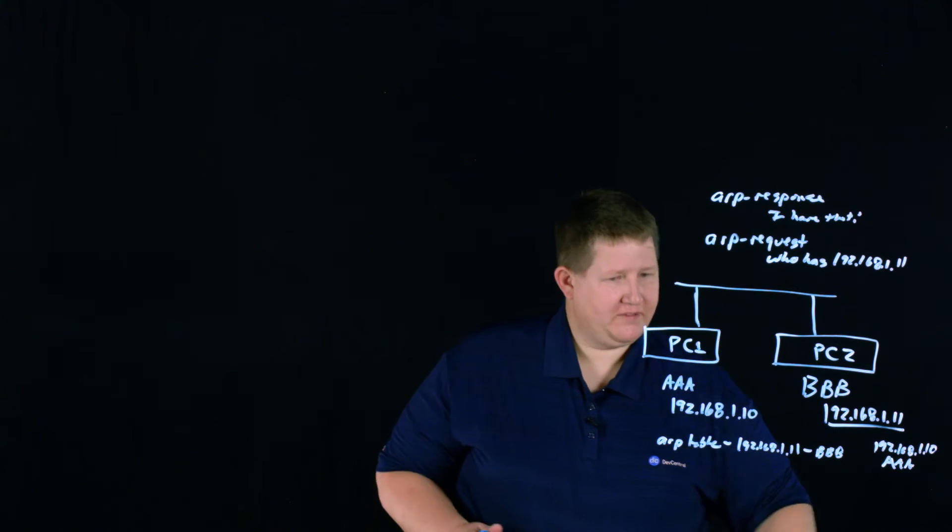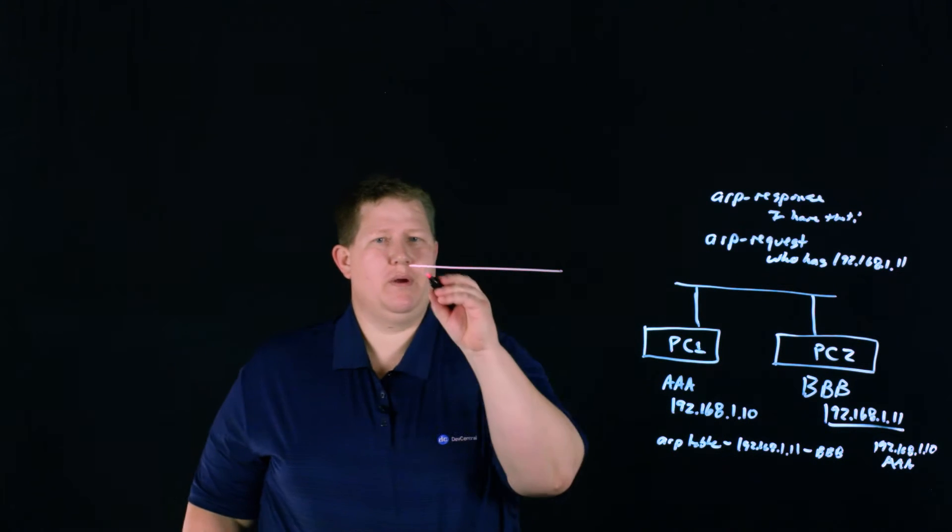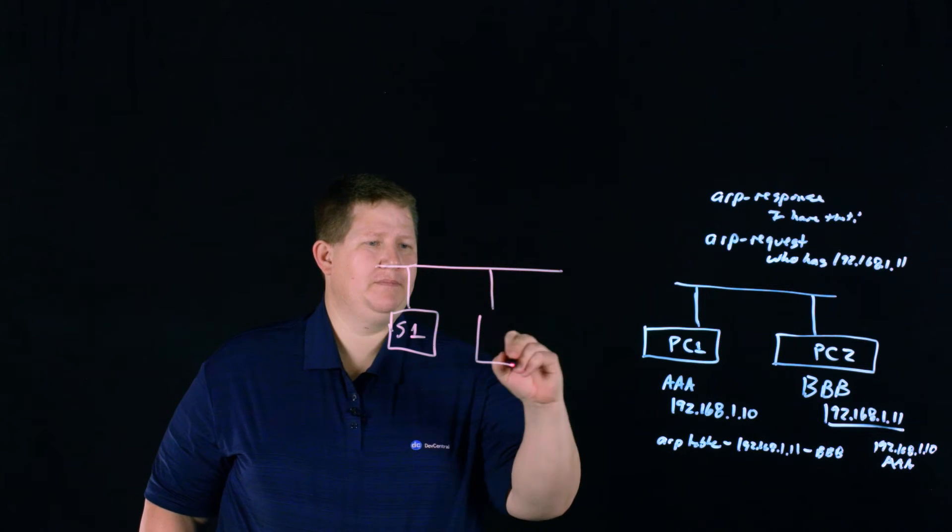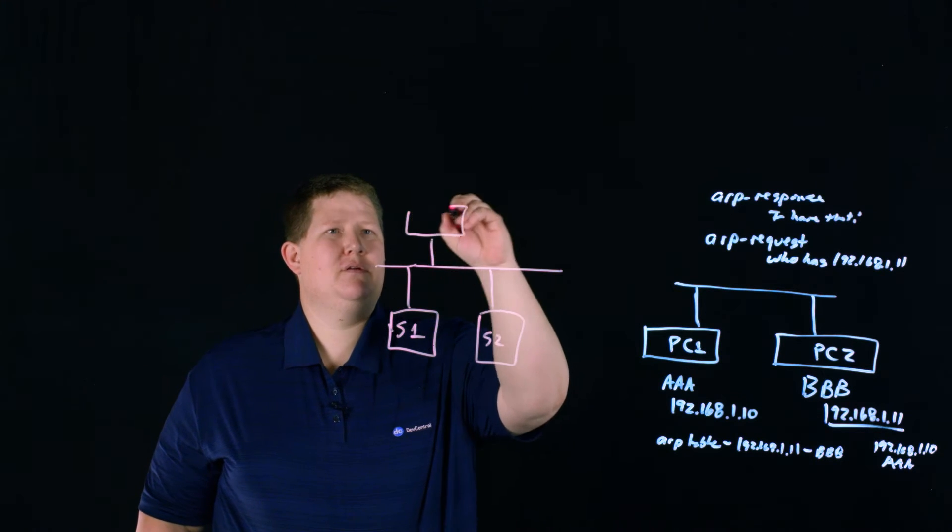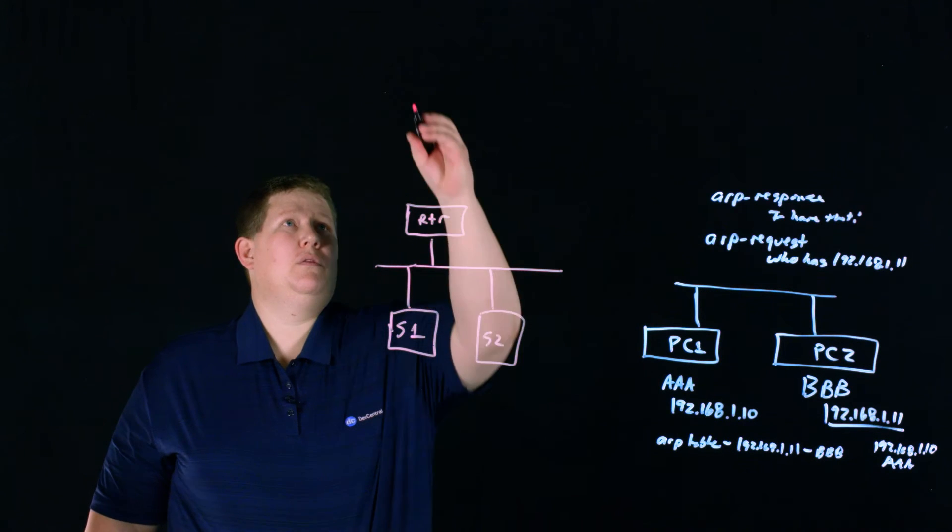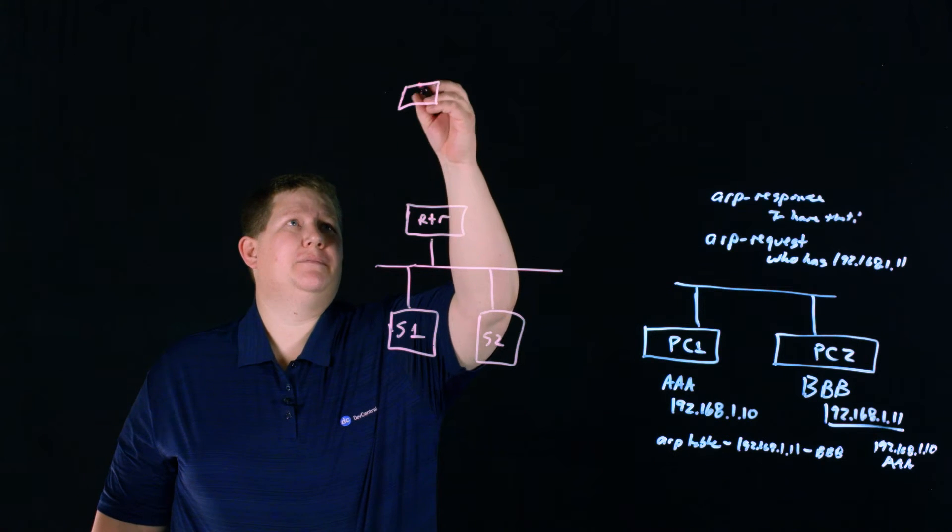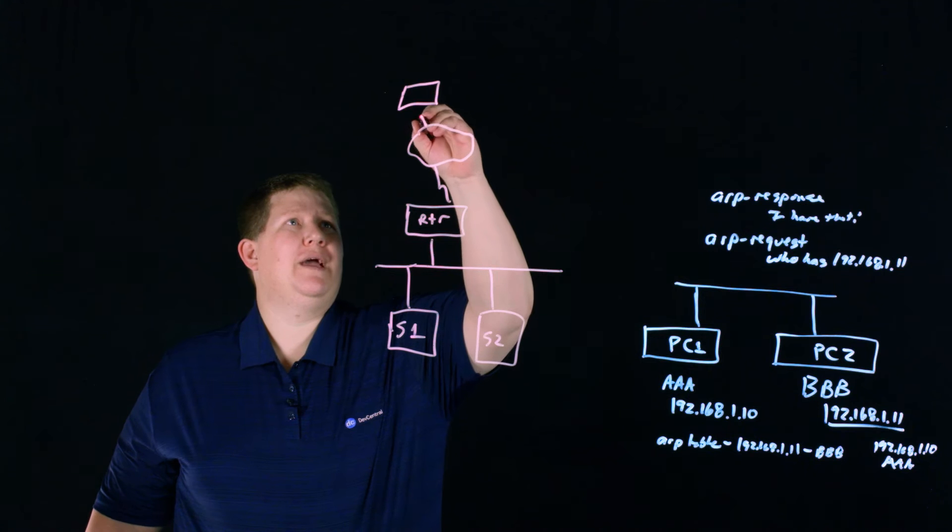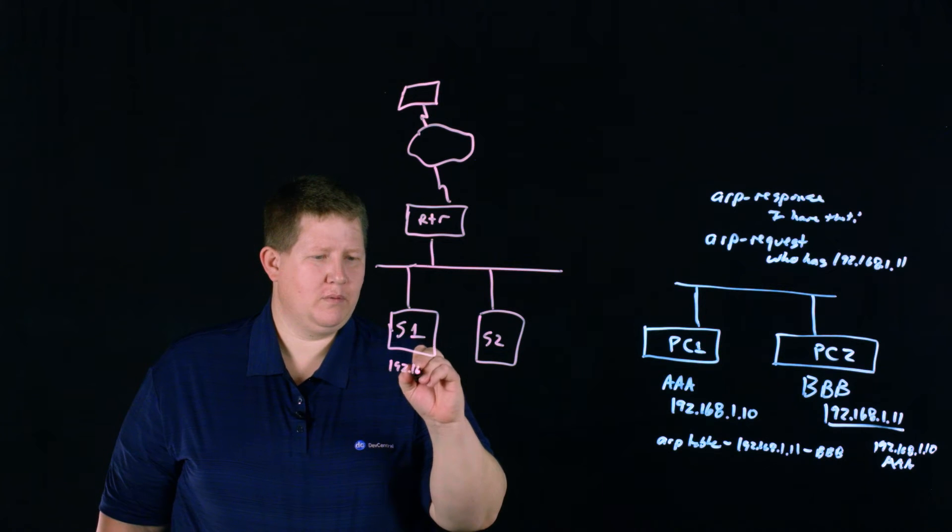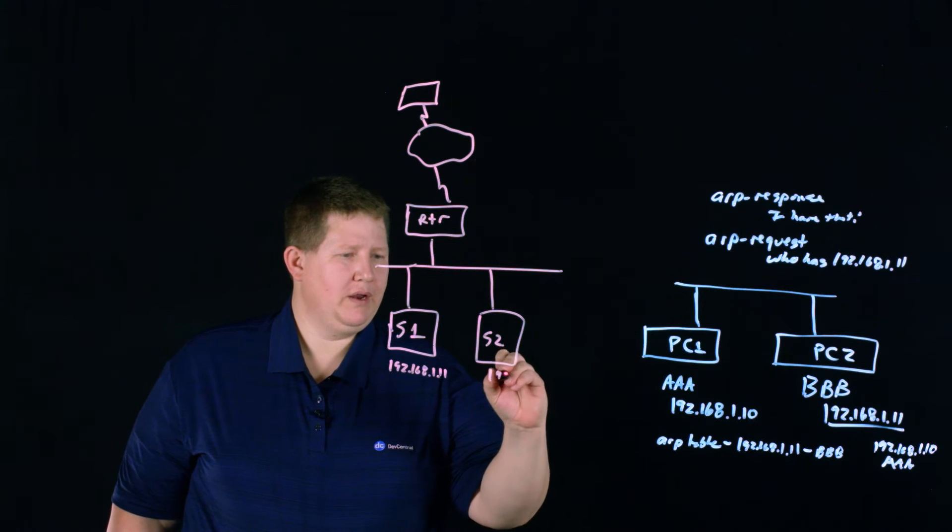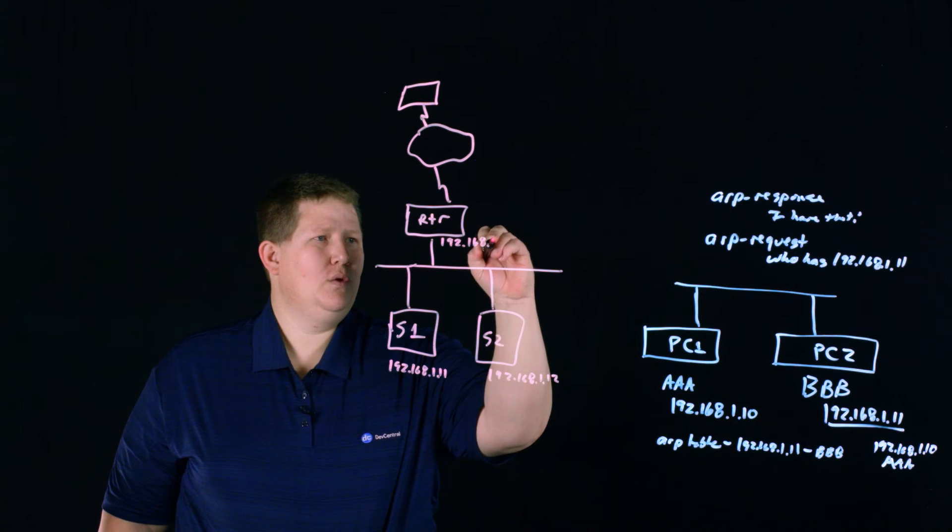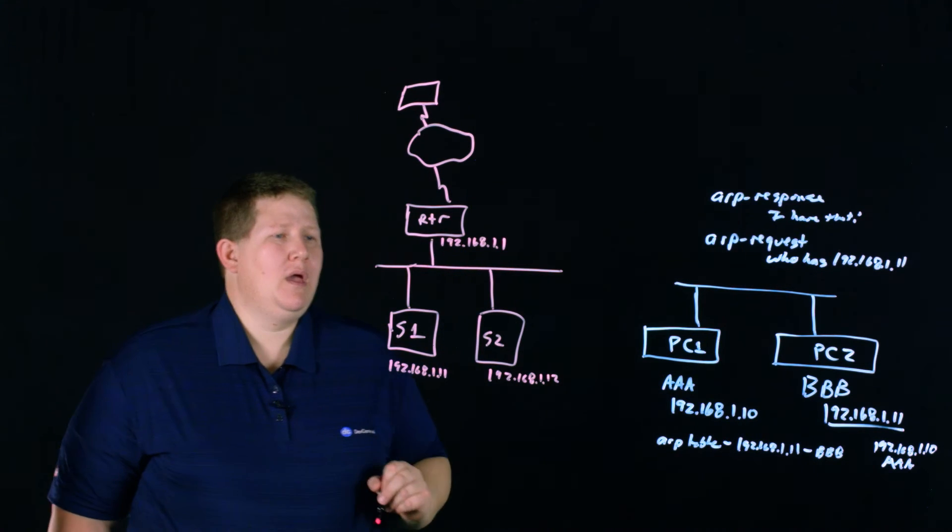Now, where this gets a little more interesting is in the environment to where we'll have, say, a server. So we have S1 and S2. And then we have a router. And then an IP address. Let's say we have something out here in the cloud. So we have a connection out there. And so, again, this is 192.168.1.11 and 192.168.1.12. And let's say this is 192.168.1.1.